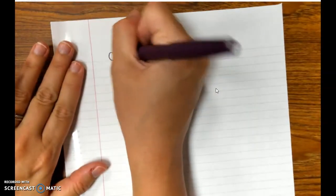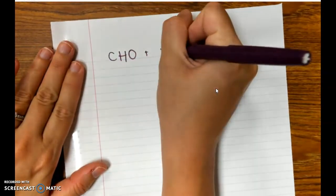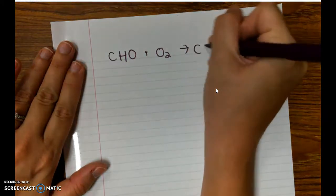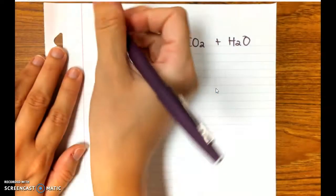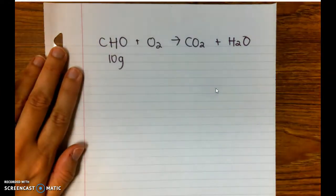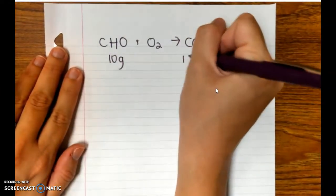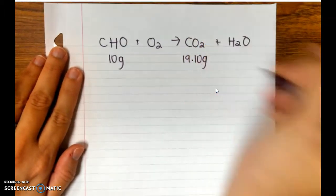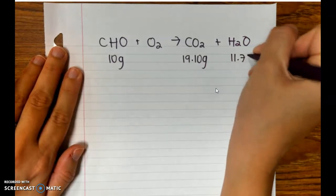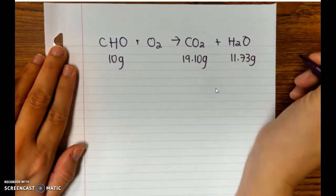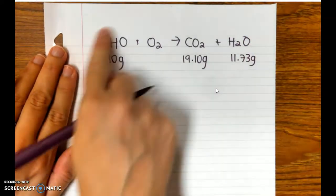I'm going to work a combustion problem with a CHO compound. Here is my general reaction. We were told that you had 10 grams of this sample, and it produced 19.10 grams of CO2 and 11.73 grams of water.